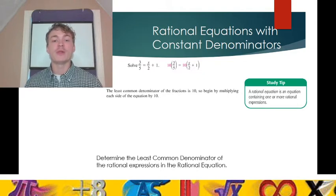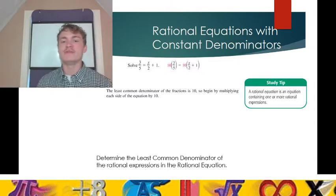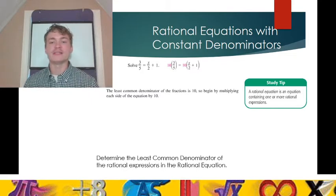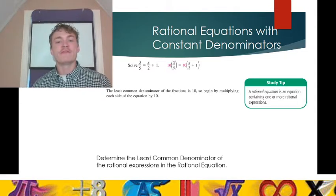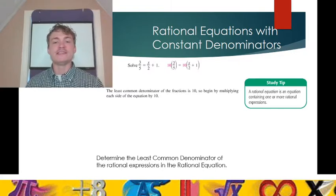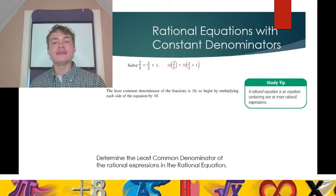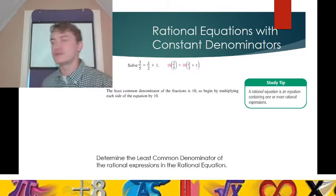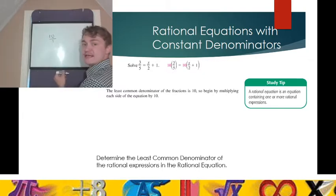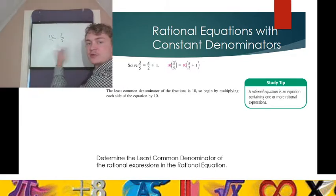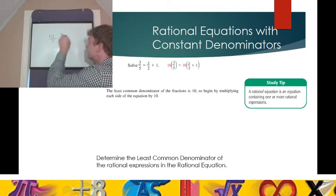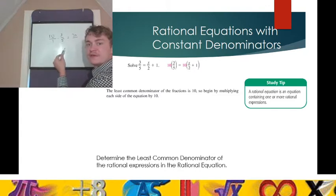We will begin by multiplying each side of the equation by 10. That makes sense — the smallest number that both 5 and 2 can divide into is 10: 10 divided by 5 is 2, and 10 divided by 2 is 5. On the left-hand side, the fraction 3/5 is being multiplied by 10. If you have 10 times 3/5, treating 10 as the fraction 10 over 1, you multiply straight across: 10 times 3 is 30, over 5. So 10 multiplied by 3/5 is 30/5, and 30 divided by 5 is 6.